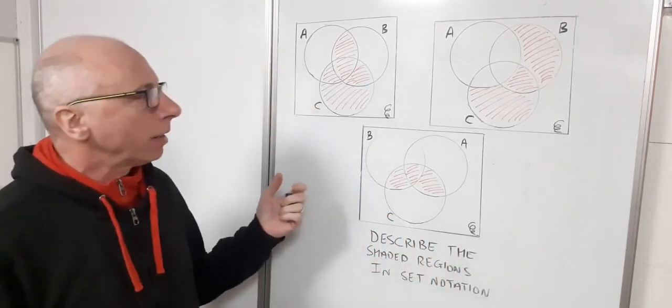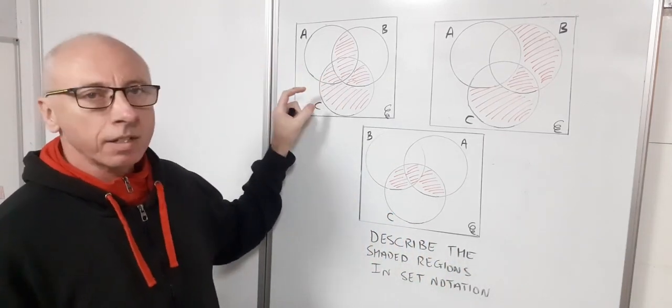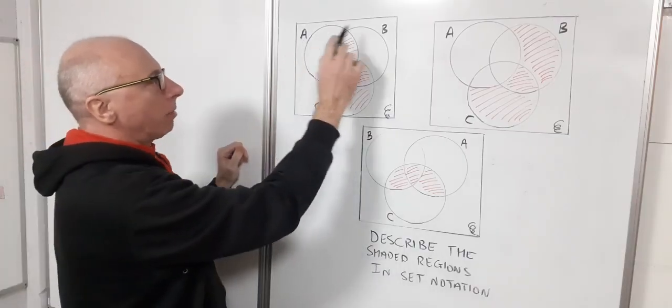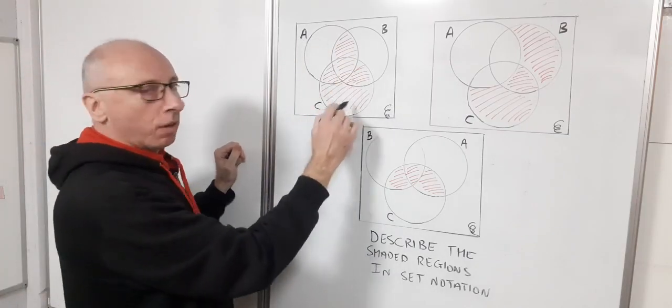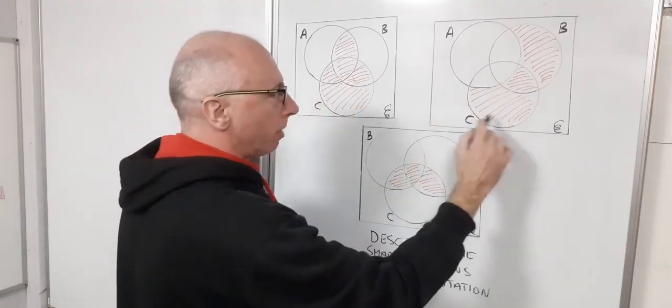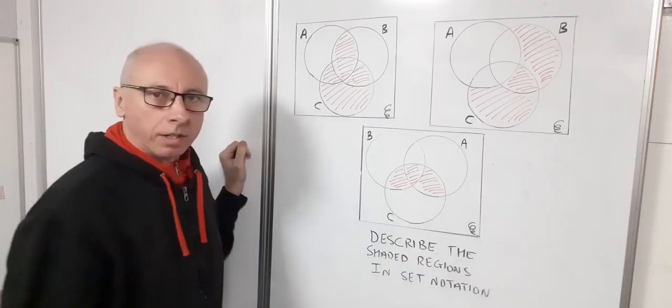Here we've got three Venn diagrams with three intersecting circles that intersect completely. I've got A, B, and C here all overlapping, and even this bit here where it overlaps all three, and that's the same on all of these diagrams.